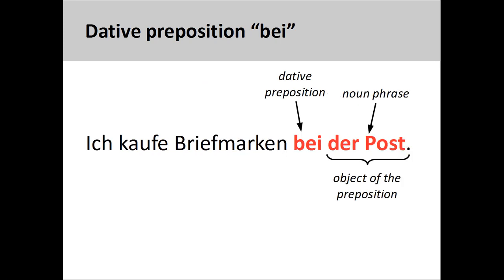When you want to express the idea that you purchased something at a certain store or place, you also must use 'Bei' as the preposition. For example, 'Ich kaufe Briefmarken bei der Post' — I am buying stamps at the post office.